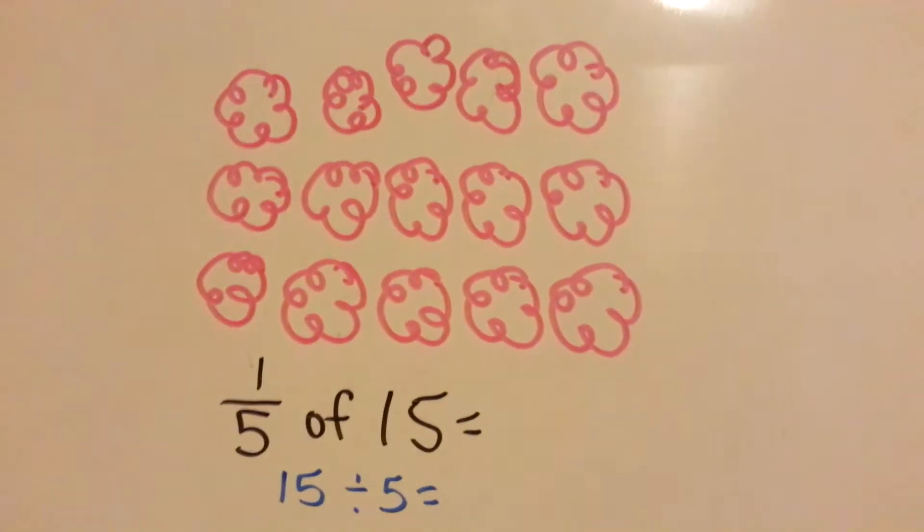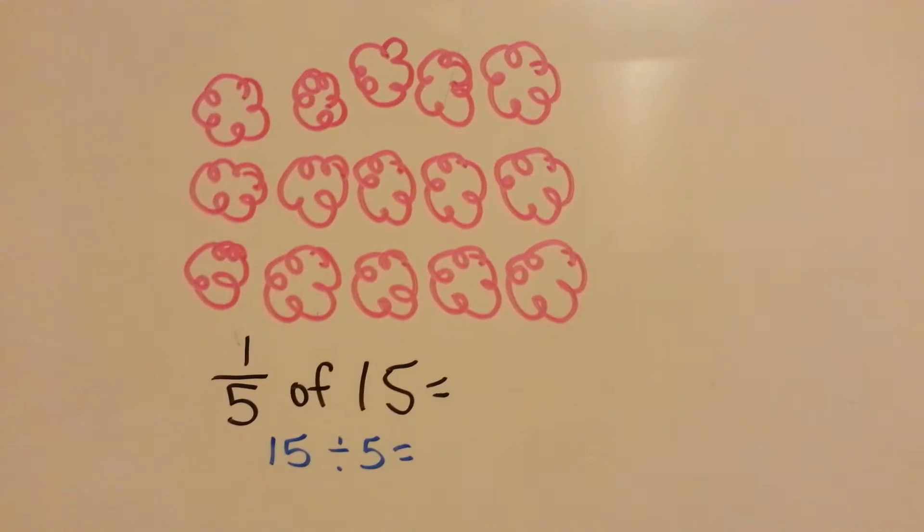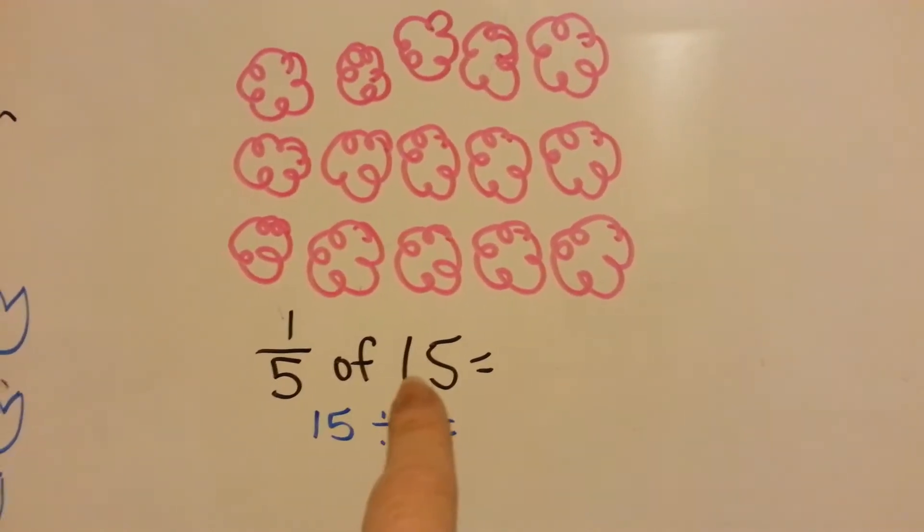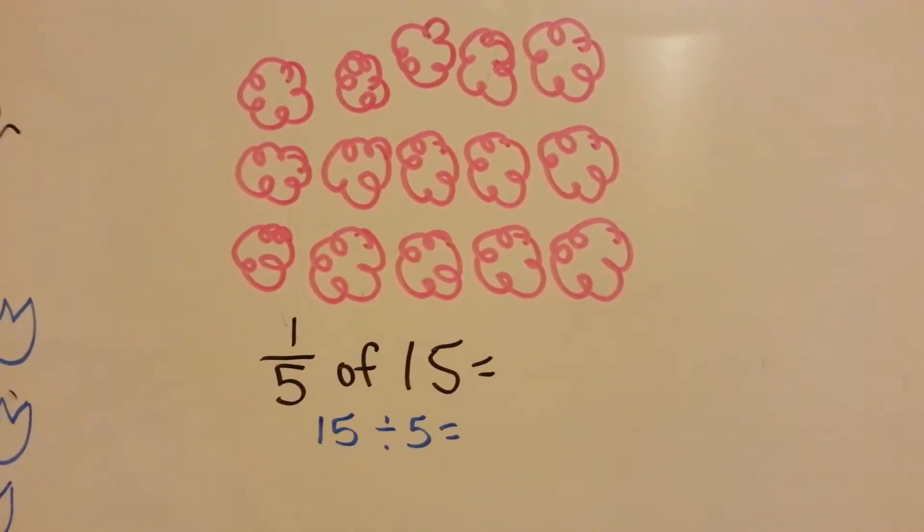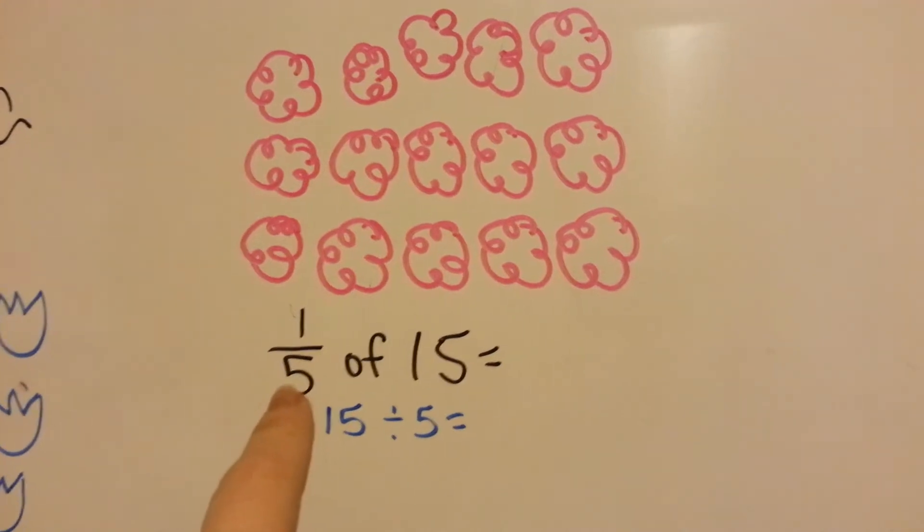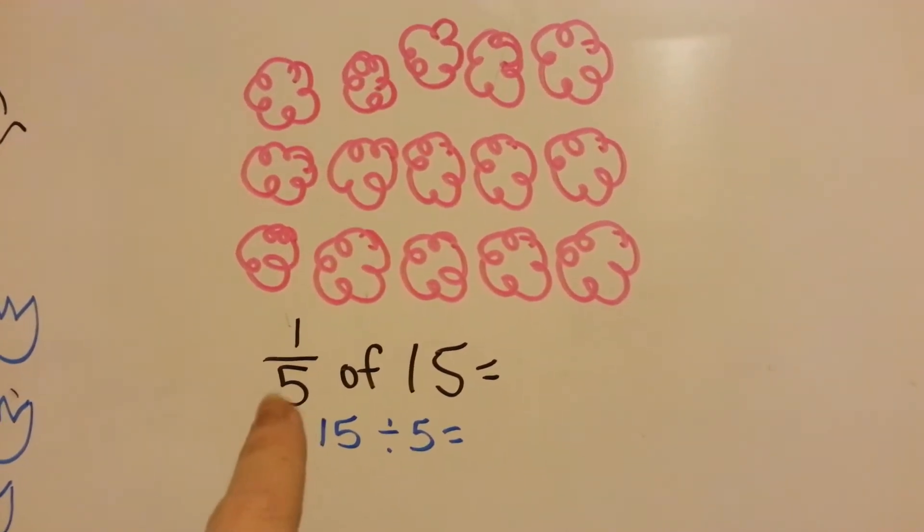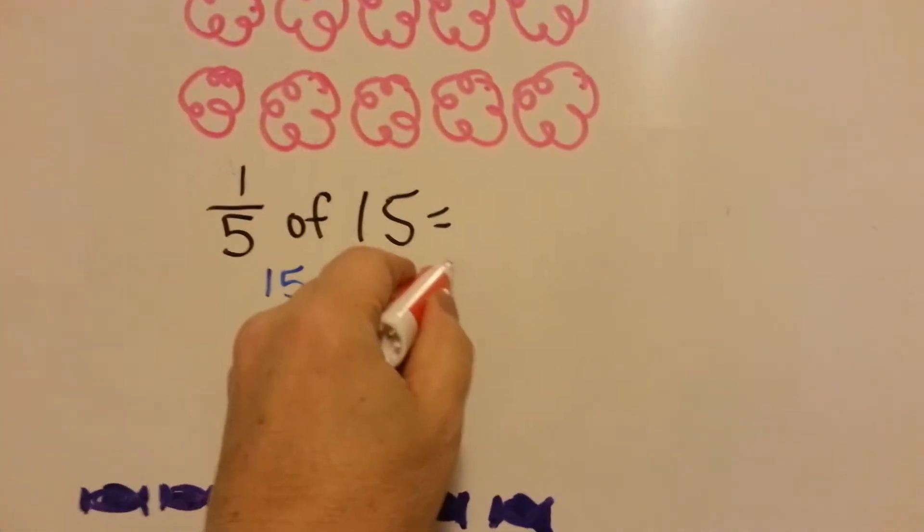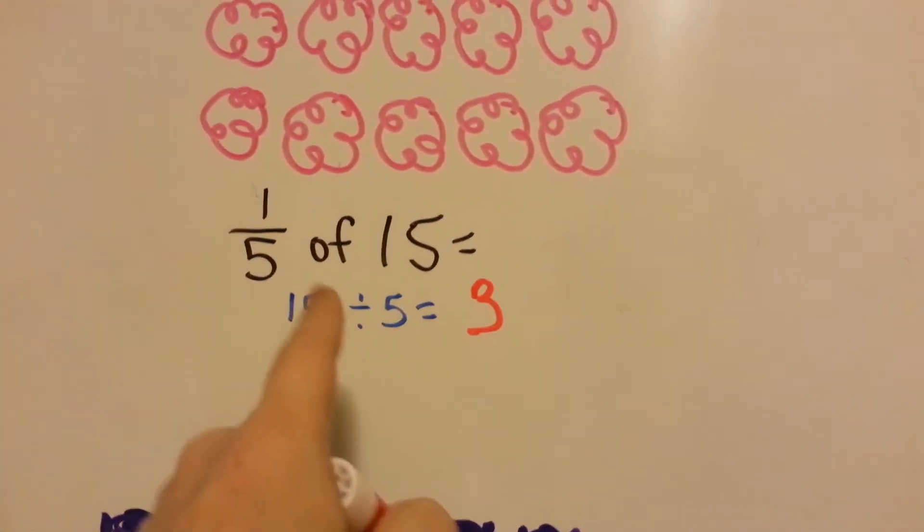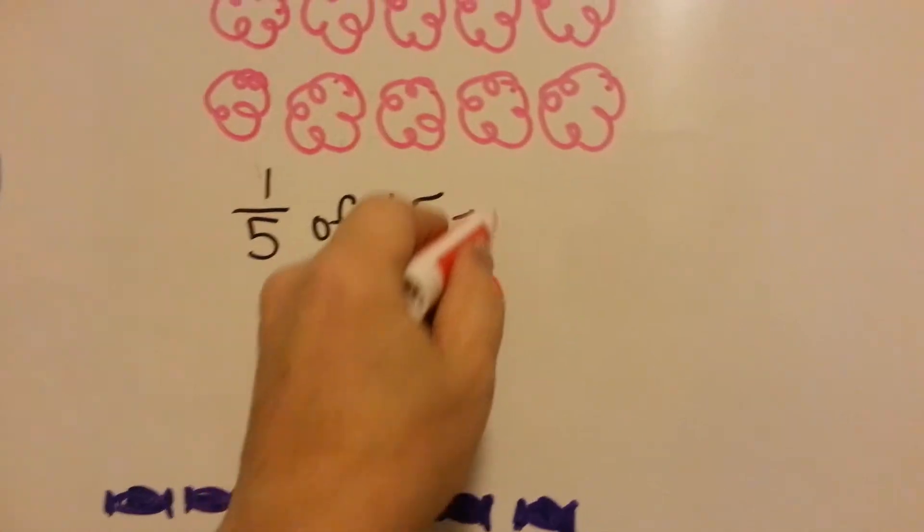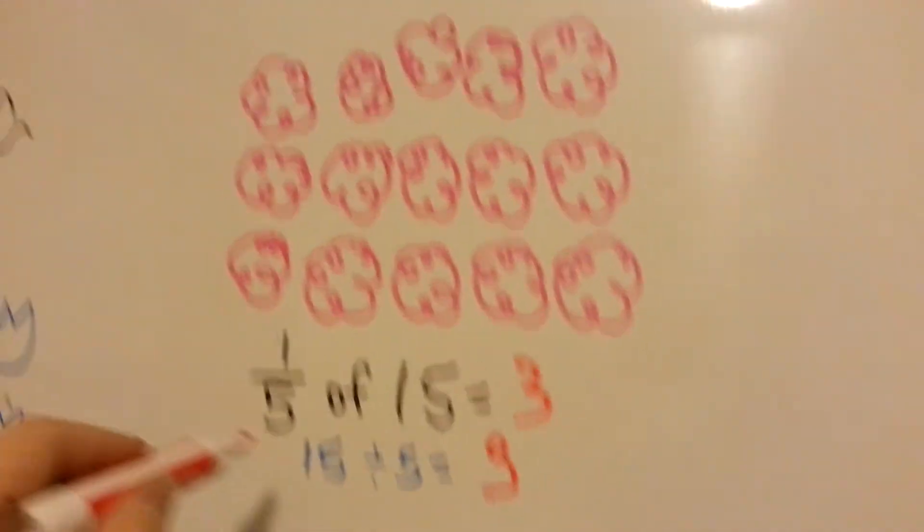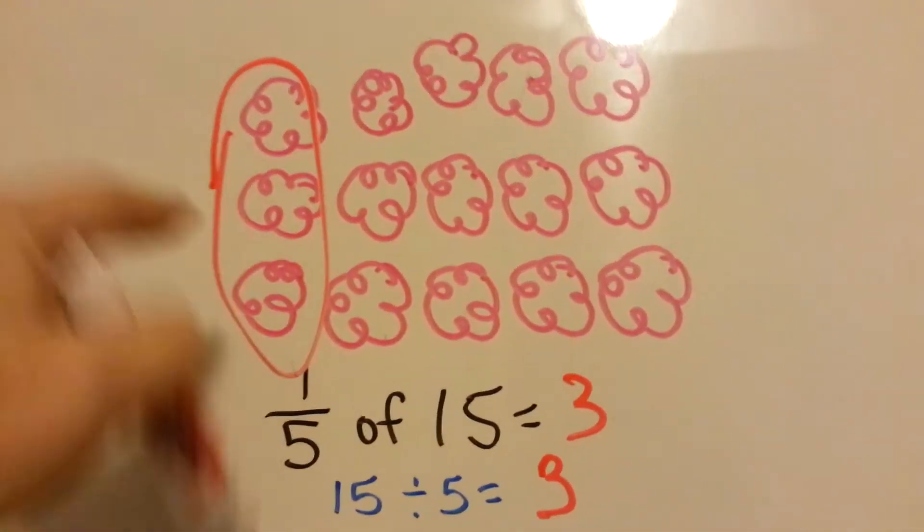Now we have one fifth of 15. So what we're going to do is we're going to divide 15 by 5. Five times what is 15? Five times 3. So one fifth of 15 would be 3, and we would circle 3 of these flowers.